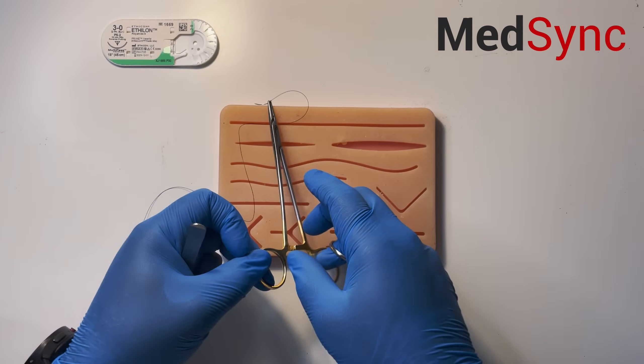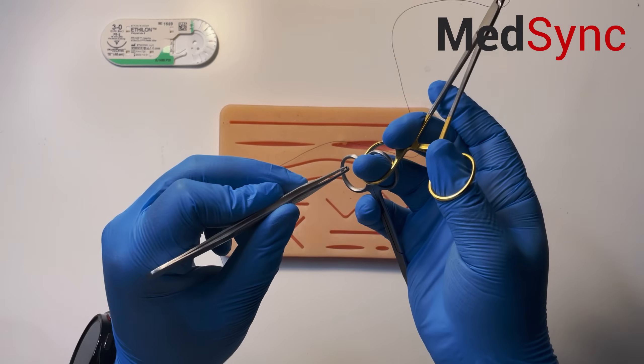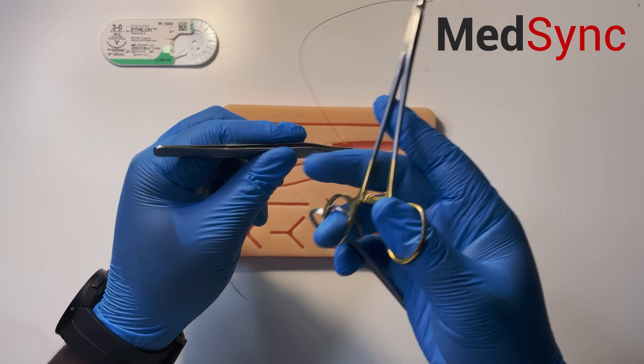You mount your needle holder in the usual fashion. You take your forceps - ring finger and thumb, index finger and thumb.